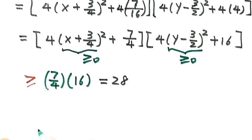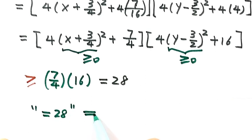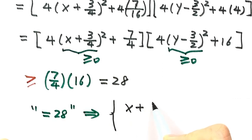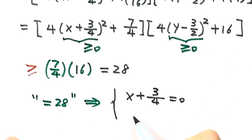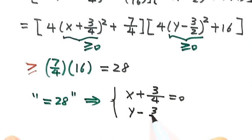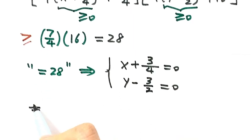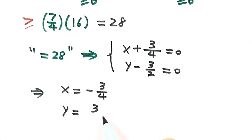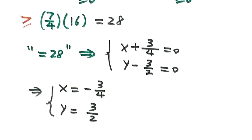That's why if the expression equals 28, the equal sign holds only when both squared terms are zero. So we have two equations: x plus 3/4 equals 0, and y minus 3/2 equals 0. Solving these gives x equals negative 3/4 and y equals 3/2. This is the solution of the equation.